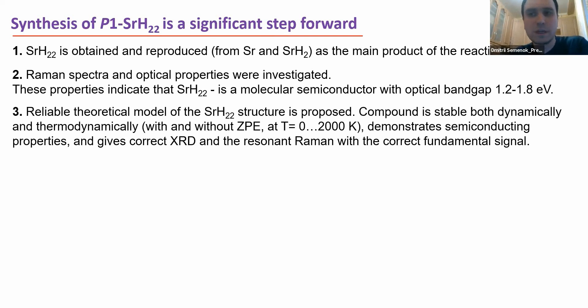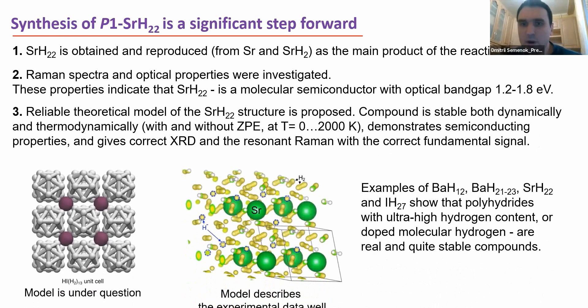We obtained the Raman spectra and optical properties and these properties indicate that strontium H22 is a molecular semiconductor with optical band gap about 1.8 electron volts and a reliable theoretical model of this strontium H22 structure is proposed by us. The compound is stable both dynamically even in harmonic approximation almost and thermodynamically it lies on the convex hull in the wide range of temperatures. It demonstrates semiconducting properties and gives correct XRD and resonant Raman with the correct fundamental signal. Examples of such hydrides with ultra-high hydrogen content is now not so rare. I mean they all can be considered also as doped molecular hydrogen and I think that with such examples as barium H12, barium H21, H23, strontium H22 and yttrium H27, actually we can say that such ultra-high hydrogen content is now a real thing, real phenomena and all of these compounds are quite stable even at relatively low pressure about 100 GPa or even lower.